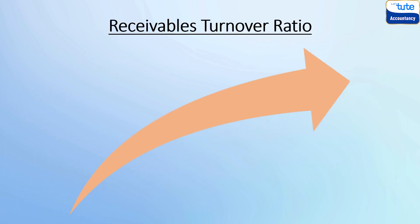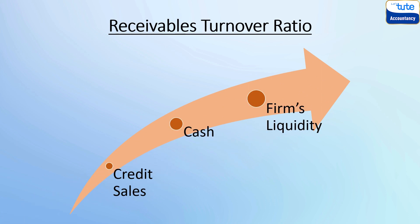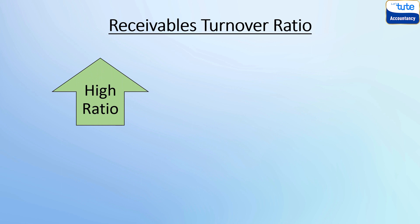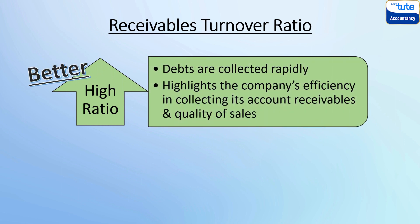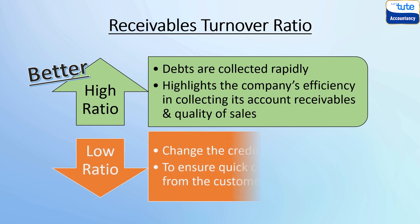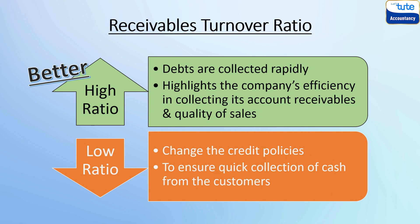This ratio indicates the speed with which the company can turn its credit sales into cash, which affects the liquidity of the firm. The higher the ratio, the better it is. A high receivable turnover ratio indicates that the debts are collected rapidly, highlighting the company's efficiency in collecting its account receivables as well as the quality of sales of the company. If the ratio is low, then the company may need to change its credit policies to ensure the quick collection of cash from the customers.